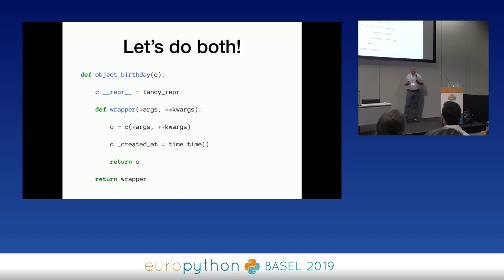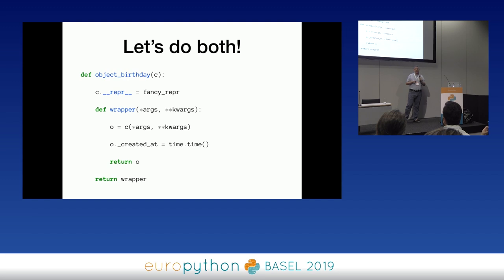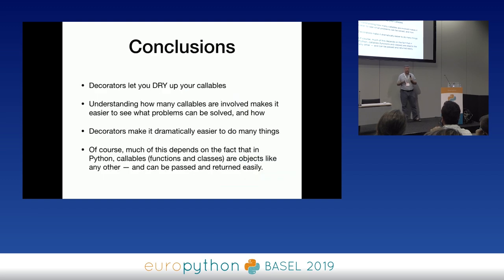Let's do both: at the outer function level I set the __repr__ attribute on the class, and on the inner function I work on each and every instance. So here I add the method, and here I add the instance attribute, and it works great.